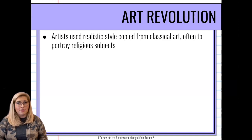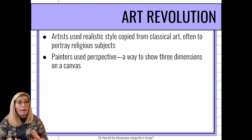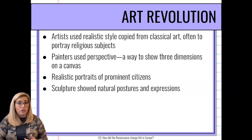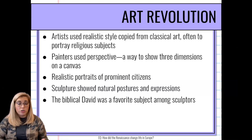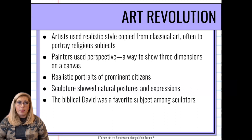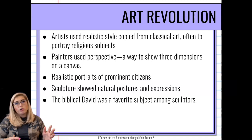We do see a revolution in artistic style — a realistic style copied from classical art, usually to portray religious subjects. Painters used a new style known as perspective in their portraits, giving pictures a more 3D, realistic look that pops off the canvas. We're going to see realistic portraits of prominent citizens and sculptures showing natural positions and expressions. One of the most famous subjects for sculptures is the biblical David — from the story of David and Goliath. This is also where we start to see grand portraits of royal families come out.